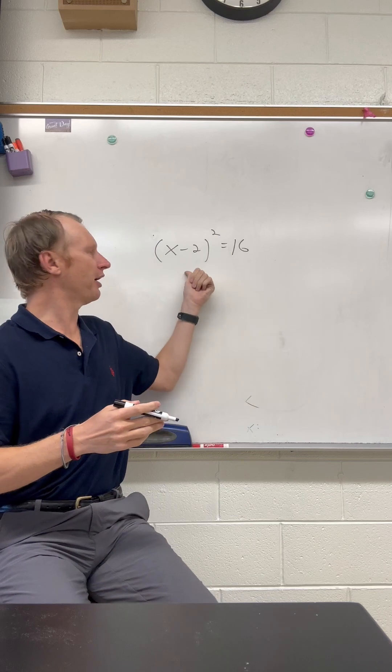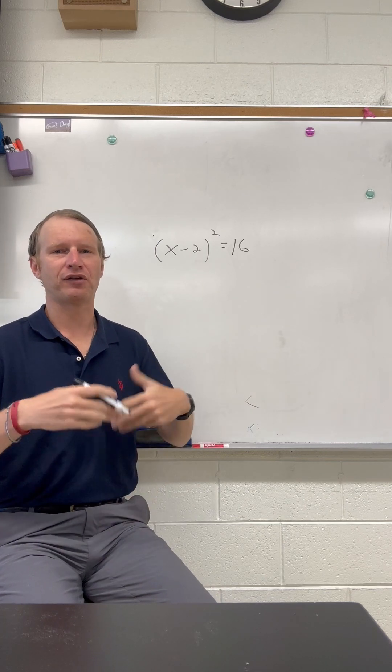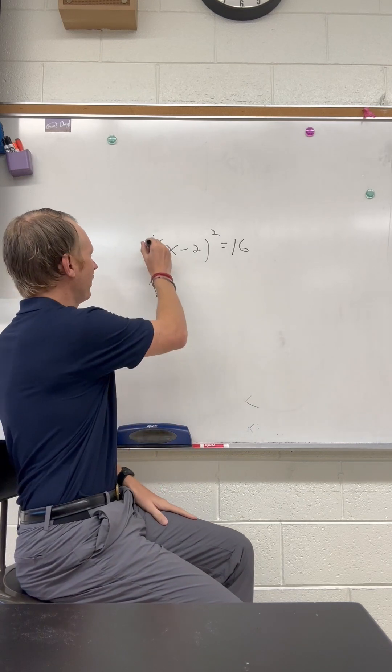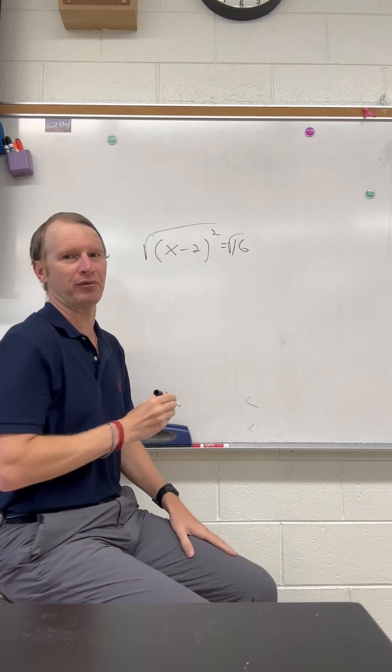So we have an entire quantity squared on the left side. So let's take the square root of both sides, and let's start with that. So we take the square root of the left and the square root of the right.